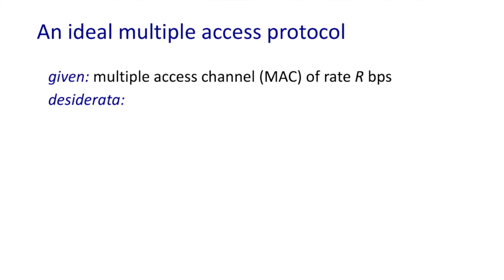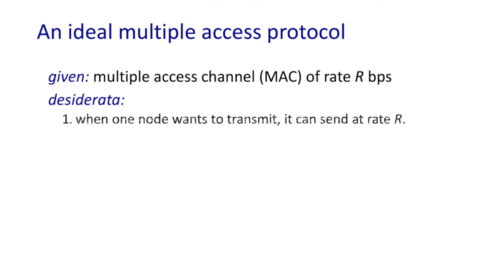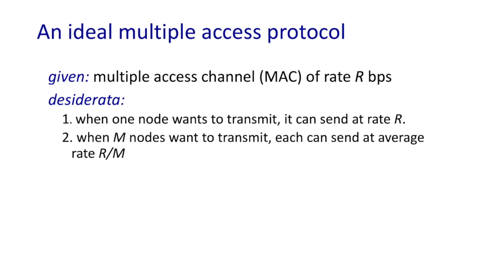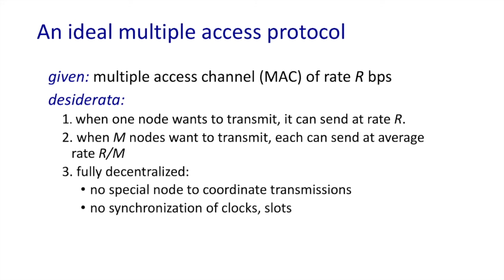Before we start taking a look at multiple access protocols, let's think about what we'd ideally like a multiple access protocol to do. First, when a node wants to transmit, hopefully it'll be able to transmit at rate R, the maximum rate of the channel. And when M nodes want to transmit, we want fairness — each node should be able to send at an average rate of R over M. We might like it to be fully decentralized, so there's no special node coordinating transmission, and maybe no synchronization of clocks or slots. We'd like to keep it simple.